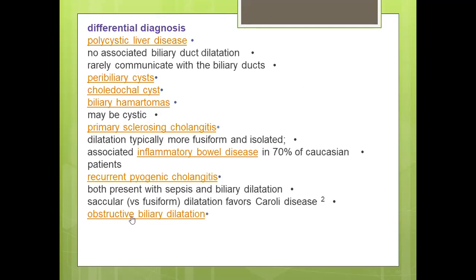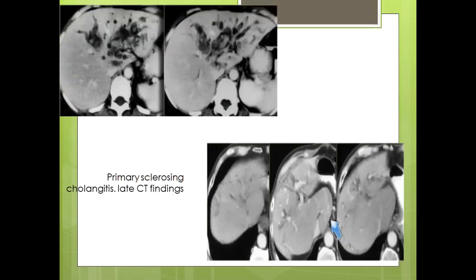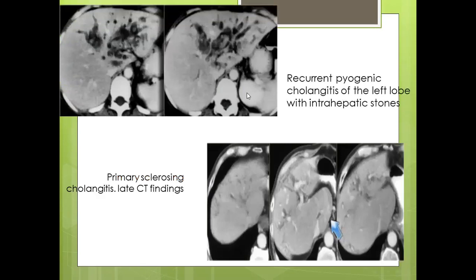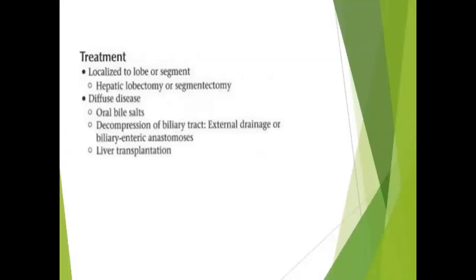Obstructed biliary dilatation should also be excluded. An example of recurrent pyogenic cholangitis of the left lobe with intrahepatic stones is shown for comparison, as well as primary sclerosing cholangitis with cirrhotic changes, showing hypertrophy and dilated biliary tree. Regarding treatment: if localized, lobectomy or segmentectomy is performed. For diffuse disease, treatment includes oral bile salts, decompression of the biliary tract, external drainage, biliary-enteric anastomosis, or liver transplant.